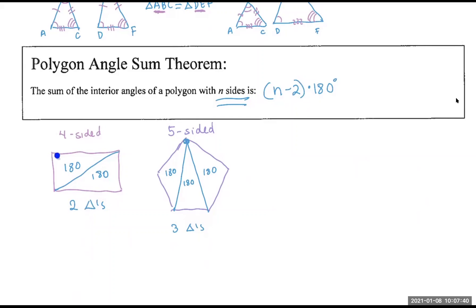If I added this angle, this angle, this angle, and this angle inside, I should get 360 degrees. We explored that with the pentagon and saw that there were three triangles. A five-sided figure ended up with three triangles, so it fit the formula: five minus two times 180 is 540. So that was all about the interior angles adding up to a certain sum given by this formula.